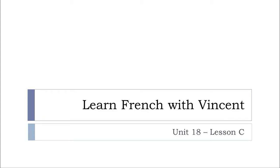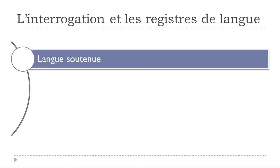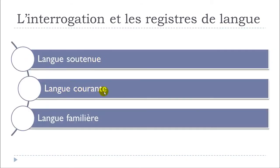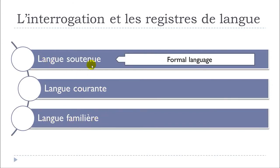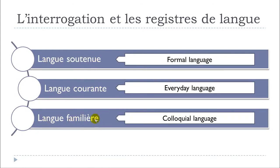Bonjour à tous and welcome to Learn French with Vincent. This is Unité 18, Leçon C. In this lesson we'll see together l'interrogation et les registres de langue, and more precisely we'll cover la langue soutenue, la langue courante et la langue familière.